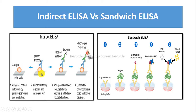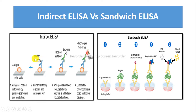In Indirect ELISA, the secondary antibody binds to primary antibody, whereas in Sandwich ELISA, the secondary antibody binds to the protein of interest. Indirect ELISA is better for determining total antibody concentration in samples, whereas Sandwich ELISA is better for analysis of complex samples.